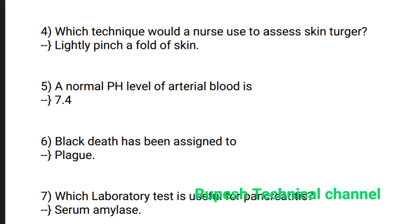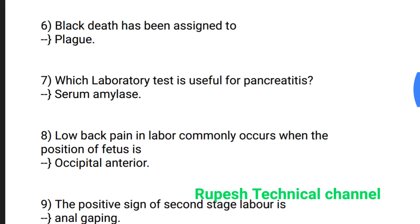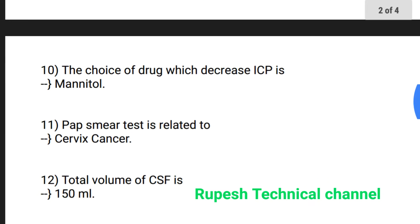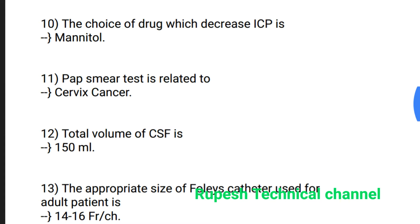Question number 6: Black tag has been assigned to plug. Question number 7: Which laboratory test is useful for karyotyping? Serum MLS. Question number 8: Low back pain in labor commonly occurs when the position of the fetus is occipital anterior. Question number 9: The positive sign of the second stage of labor is anal gaping.